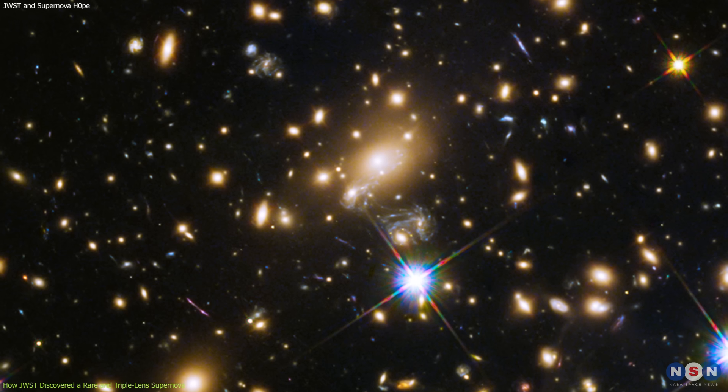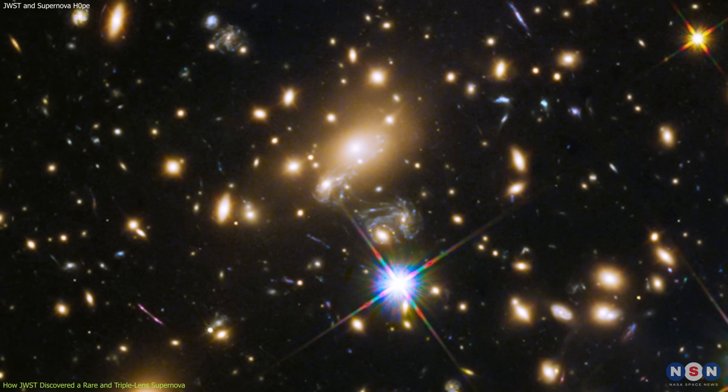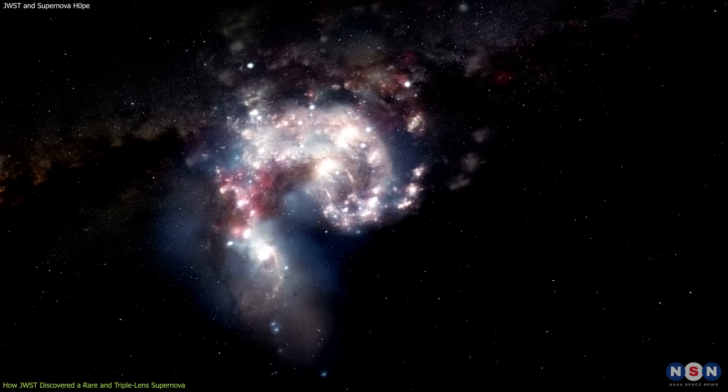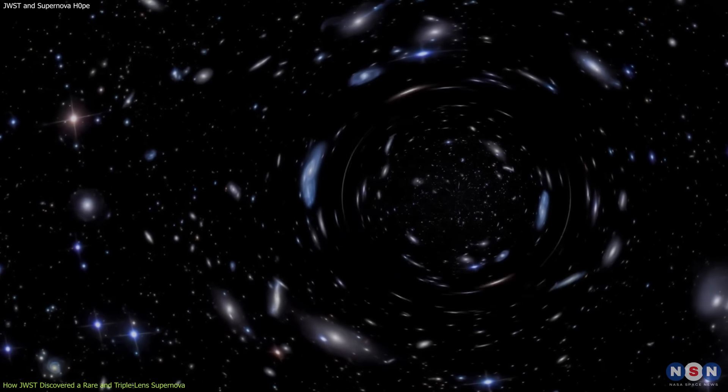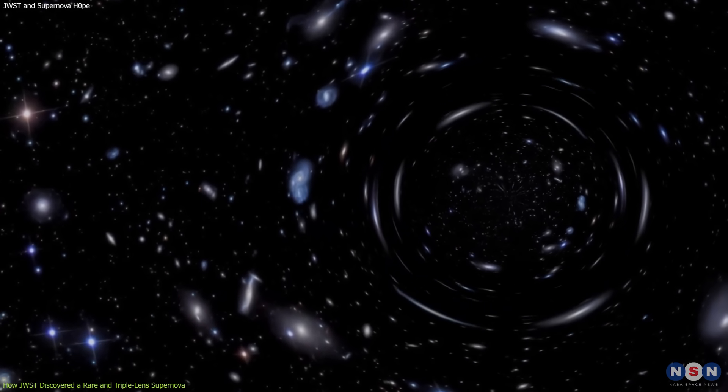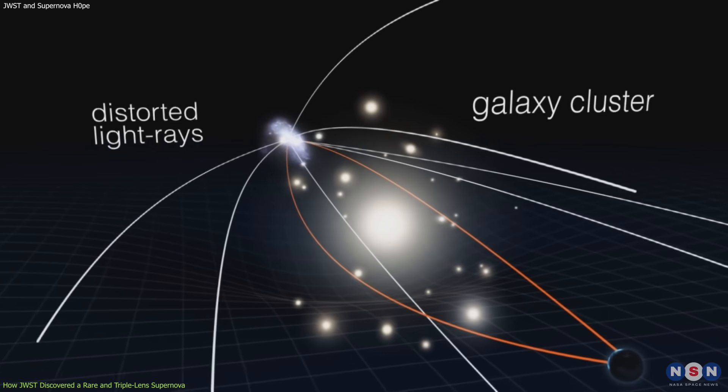In this case, it was a cluster of galaxies that was located between James Webb and the supernova. This cluster, named Max J 1149, has a mass equivalent to about 10 trillion suns and contains hundreds of galaxies. It is so massive that it creates a huge gravitational field that warps the spacetime around it.